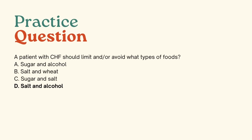The correct answer is D. A patient with CHF should limit or avoid what types of food? The correct answer is salt and alcohol. Consuming too much salt can result in fluid retention even in the healthiest person, so in those with heart failure, excessive sodium can lead to serious complications, worsen blood pressure, and exacerbate existing heart failure symptoms. Alcohol can make the heart's pumping problem worse and may weaken the heart muscles even more — it's best to avoid all forms of alcohol, including wine.